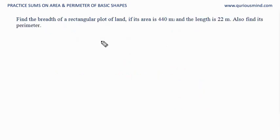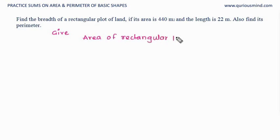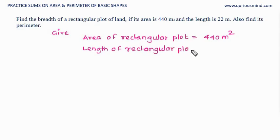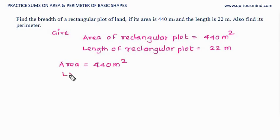Find the breadth of a rectangular plot of land if its area is 440 meter square and the length is 22 meters. Find its perimeter as well. The rectangular plot's area is 440 meter square. We know area is length into breadth, so length into breadth equals 440 meter square, and length is 22 meters.